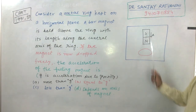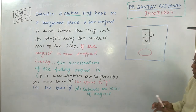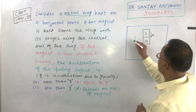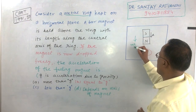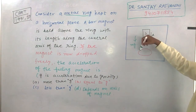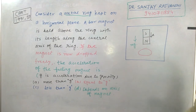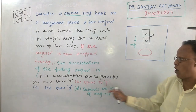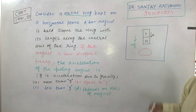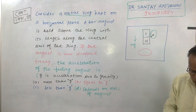If the magnet is now dropped freely, it will move with acceleration A in the downward direction, where A equals g, driven by gravitational force mg downward. Our aim is to calculate the value of A.